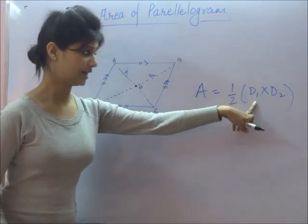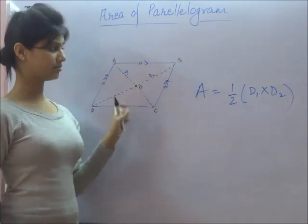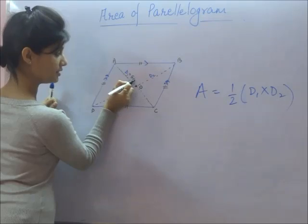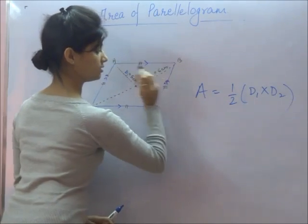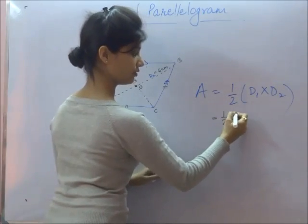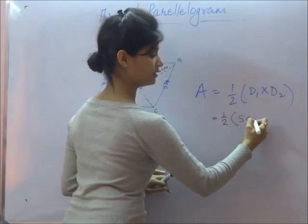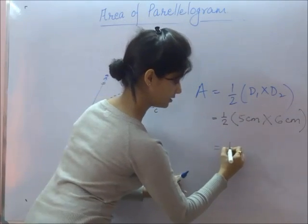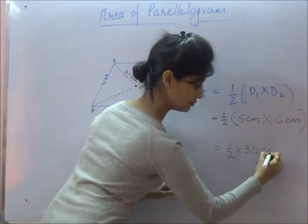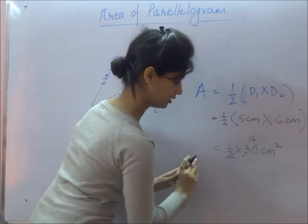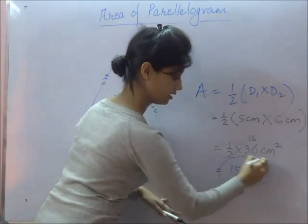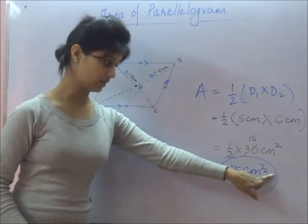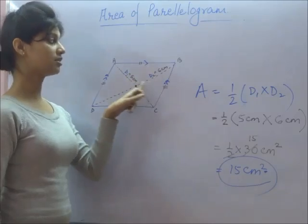That is: half multiplied by the length of diagonal 1, multiplied by the length of diagonal 2. Now, if D1 is 5 centimeters and D2 is 6 centimeters, the area would be half multiplied by 5 into 6, which is half into 30, equal to 15 centimeters square. This is the area enclosed within this closed figure.